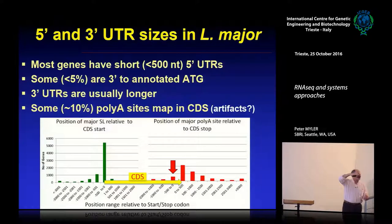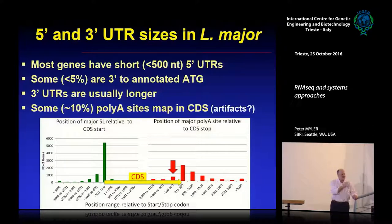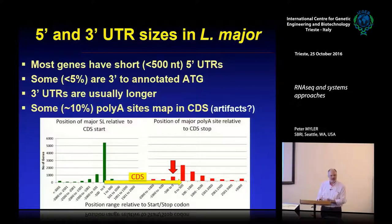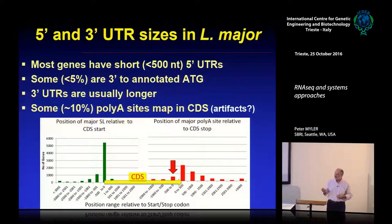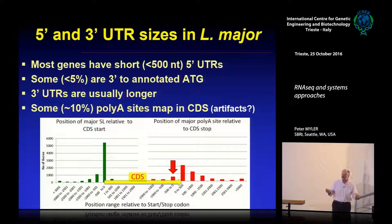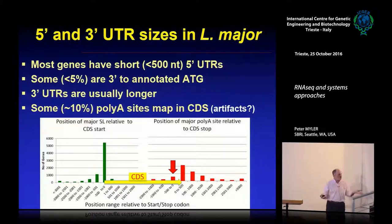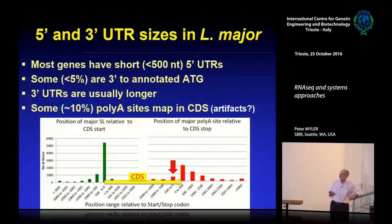At the 3' end, UTRs are typically longer — most are short but there's a long tail, with some reaching several kilobases. About 10% of the time, the poly-A site we mapped was upstream of the stop codon. This could be an artifact from internal A-runs on the coding strand when using oligo-dT, but papers from Brazil suggest it actually happens — these RNAs may really end before the stop codon, with poly-A tails added, making them non-functional.